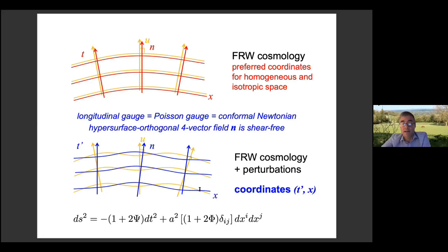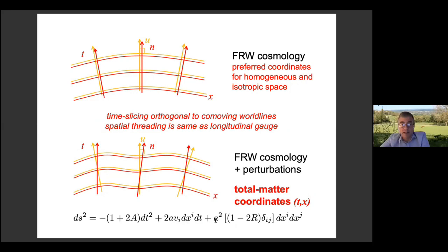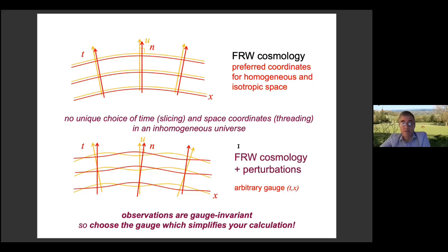Having fixed the gauge by removing the gauge ambiguity, the remaining variables such as ψ and φ — the metric potentials — become gauge-invariant metric potentials. There are other choices: for instance, you can mix different combinations of spatial threading and time slicing, such as the total matter gauge where you pick the hypersurfaces that coincide with the longitudinal gauge, giving some combination of the advantages of those two gauges. Ultimately the choice is yours — you can choose the gauge which simplifies your calculation, as long as you're clear and unambiguous in how you make that choice.